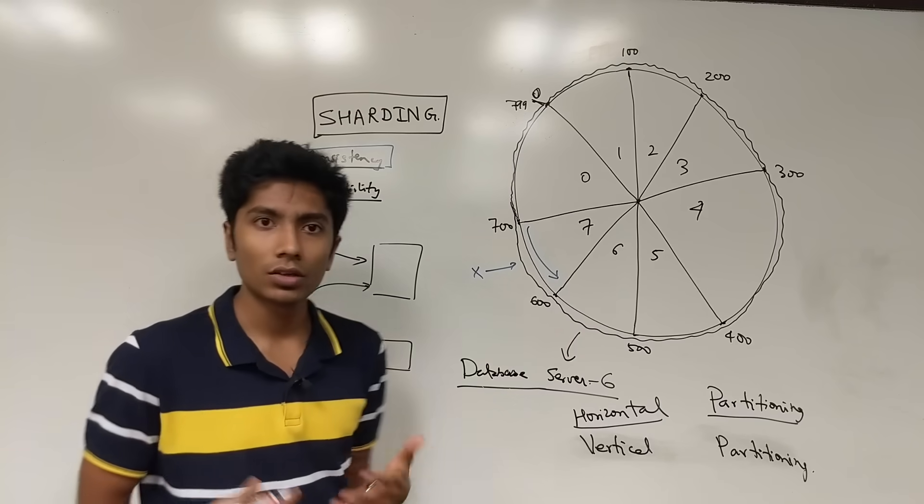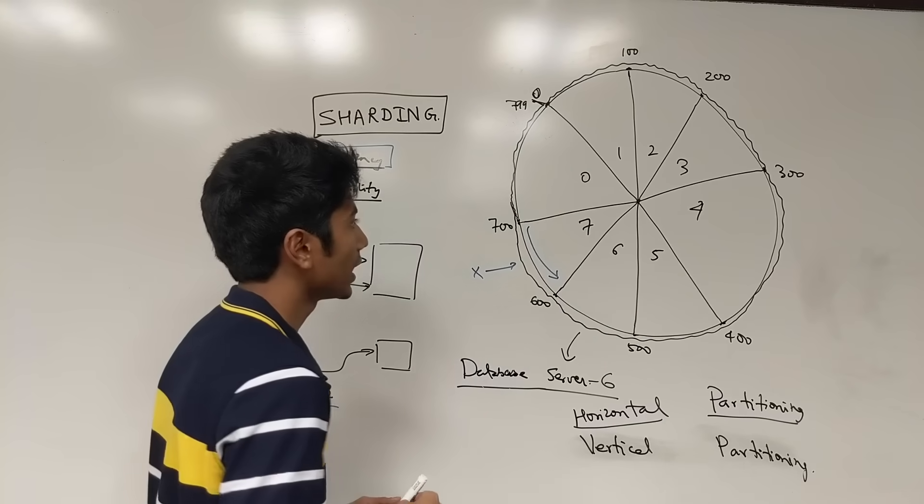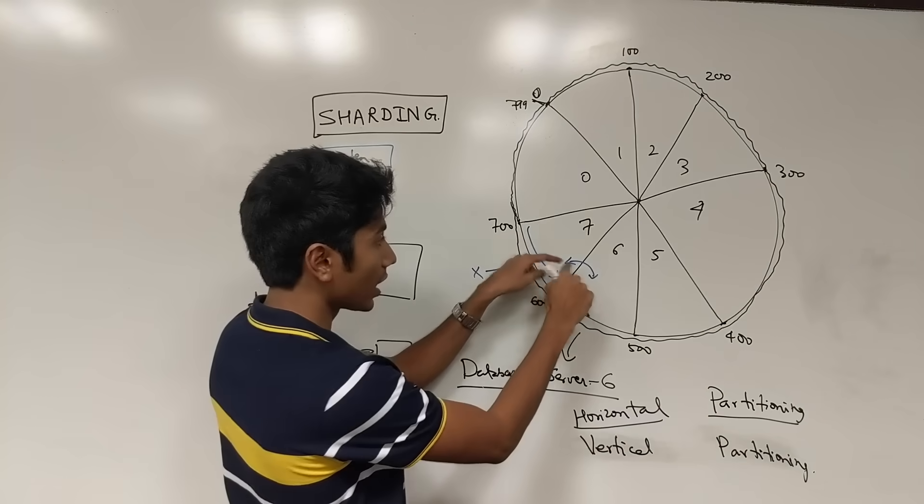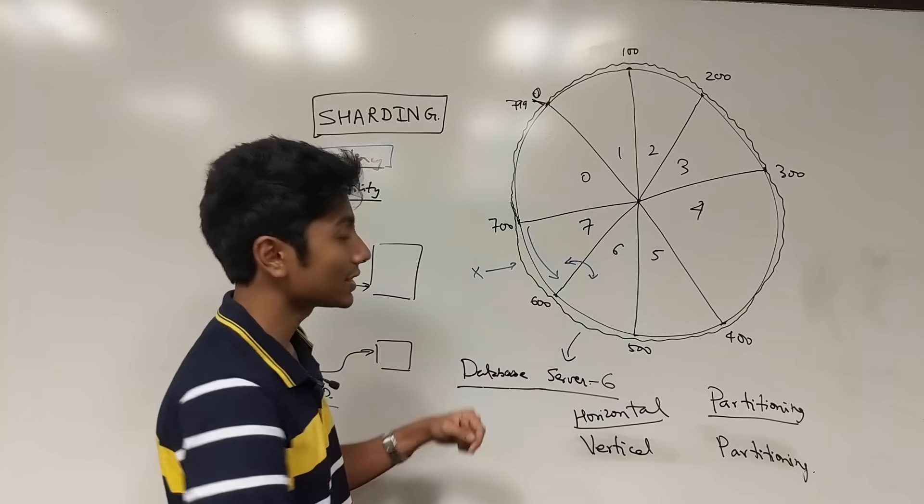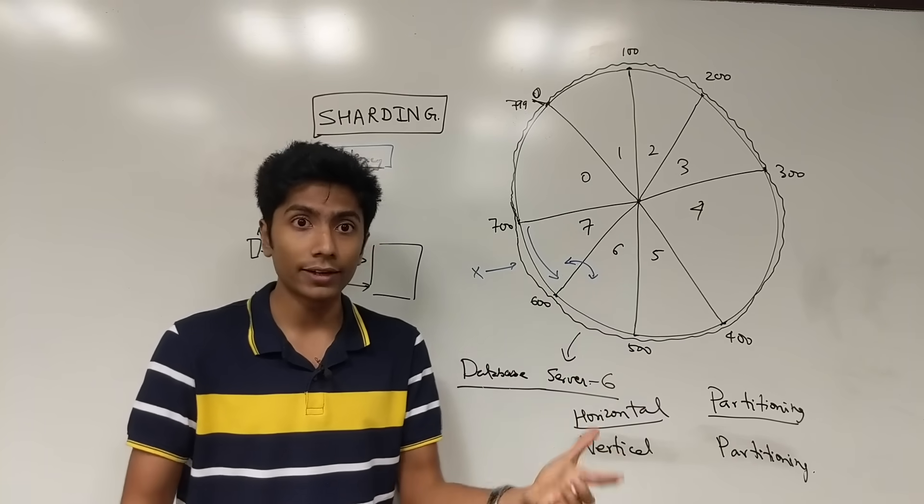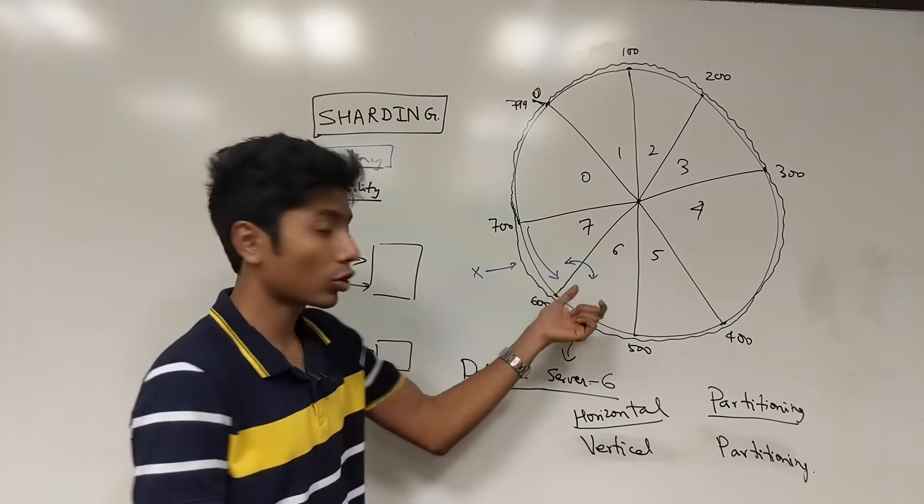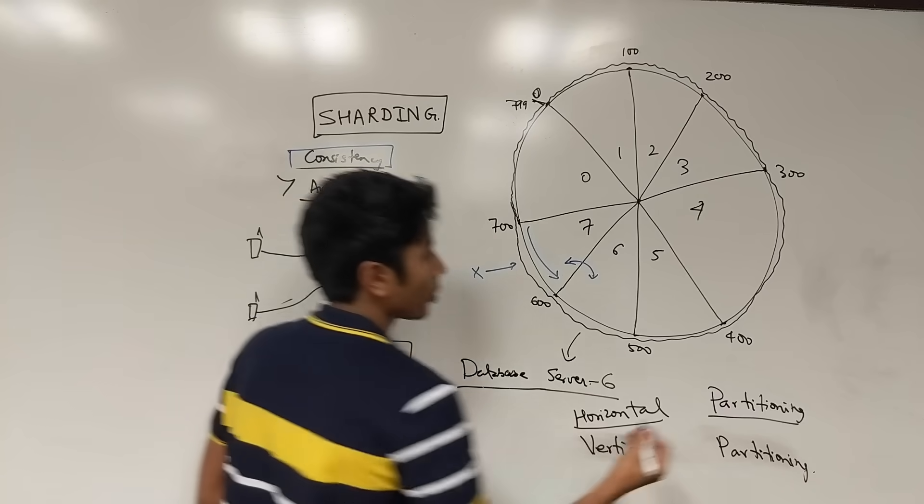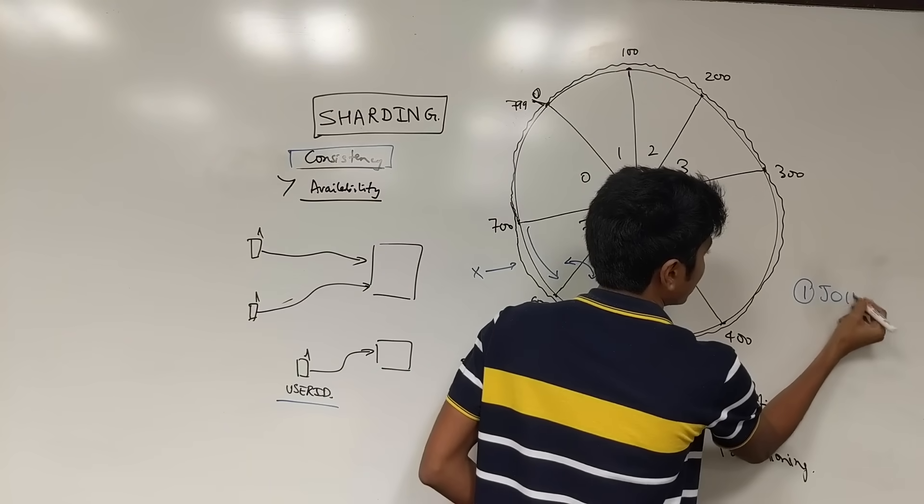And the first problem that you have to take into consideration is joins across shard. If these are across shards, what's going to happen is the query needs to go to two different shards, they need to pull out their data, then join the data across the network and this is going to be extremely expensive. So, one of the problems here are joins.